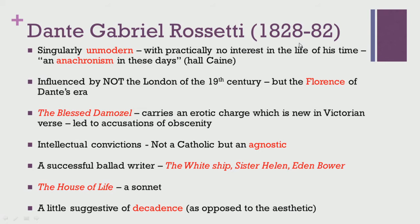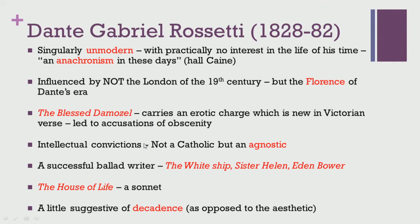The most important figure of the Pre-Raphaelite poets was Dante Gabriel Rossetti, who lived from 1828 to 1882. He was a singularly unmodern figure who fascinated his contemporaries because of his peculiar style of living. He had practically no interest in the life of his time, and one critic, Hall Cain, referred to him as 'an anachronism in these days.' He was influenced not by the London of the 19th century, but by the Florence of Dante's era — a man living in the Victorian age but not really present there mentally or aesthetically.